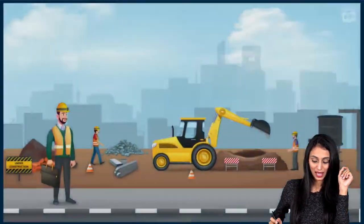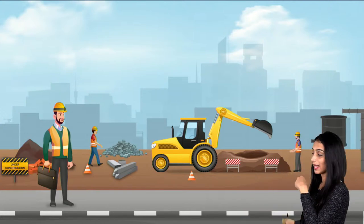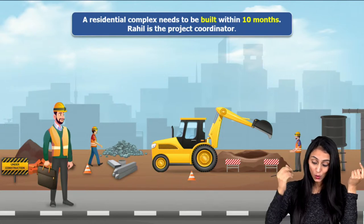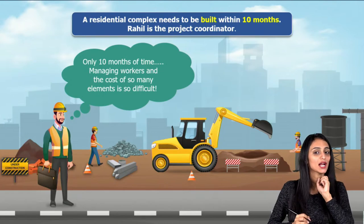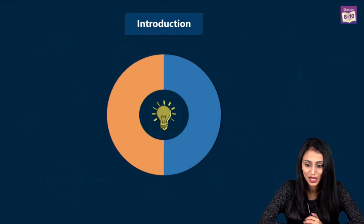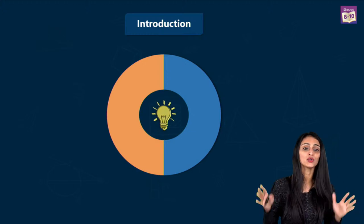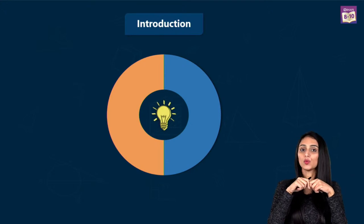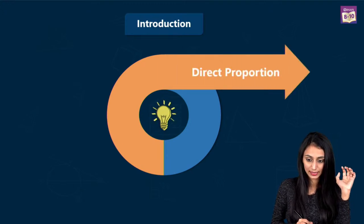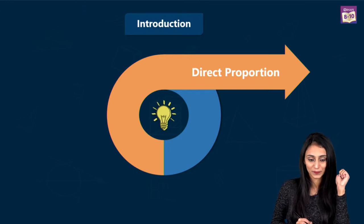Let's take an example. Here you can see a construction site with a coordinating person managing the project. His name is Rahil, and a residential complex needs to be built within 10 months. Rahil wants to know how many managing workers or cost of units are actually required for this construction. So let's help him out. In this chapter there are two topics: direct proportion and indirect proportion. We'll discuss each one by one, starting with direct proportion.